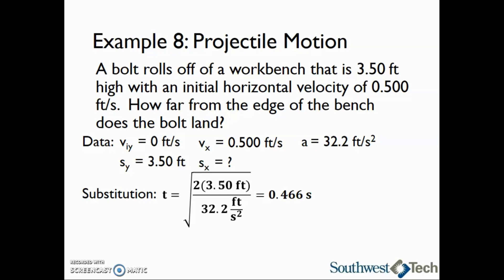The time it takes for the bolt to hit the floor is going to be the same for either dimension, so time for x is also 0.466 seconds. Substituting into the distance equation in x, we see that 0.5 feet per second times 0.466 seconds equals 0.233 feet. That means that the bolt lands about 0.233 feet from the edge of the bench.